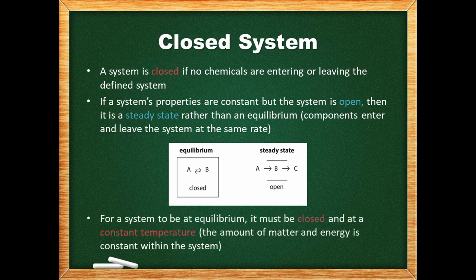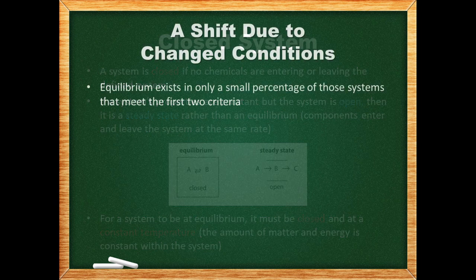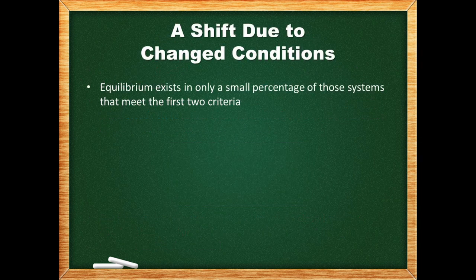For a system to be at equilibrium, it must be closed and at a constant temperature — the amount of matter and energy is held constant within the system. Of the systems that meet the first criteria, equilibrium does not exist in a large percentage. In most of these, there is really nothing happening, and they are just chemical mixtures.